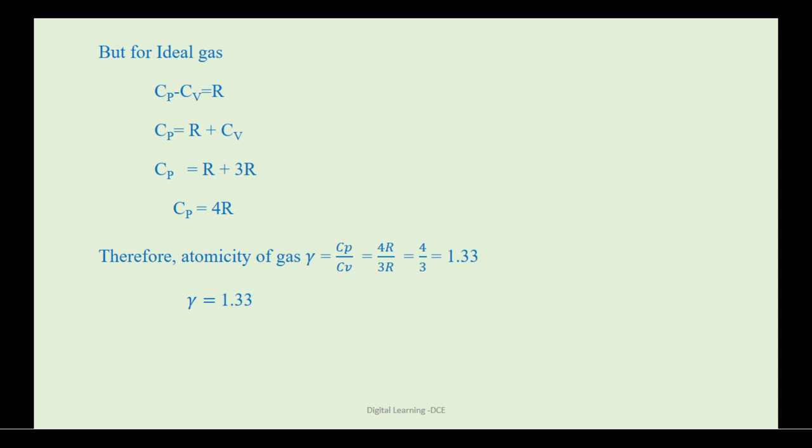By taking the ratio of Cp to Cv, its value is 1.33. This value represents the atomicity of triatomic gas molecule which is non-linear and it has 6 degrees of freedom.